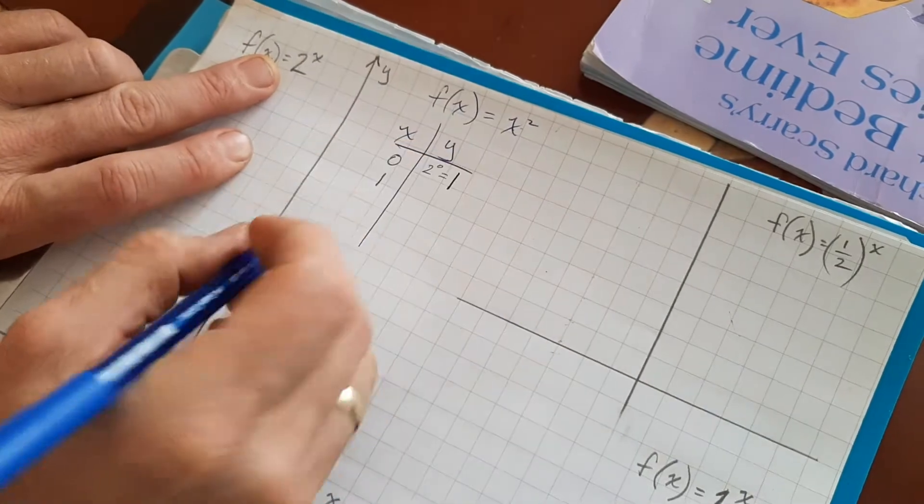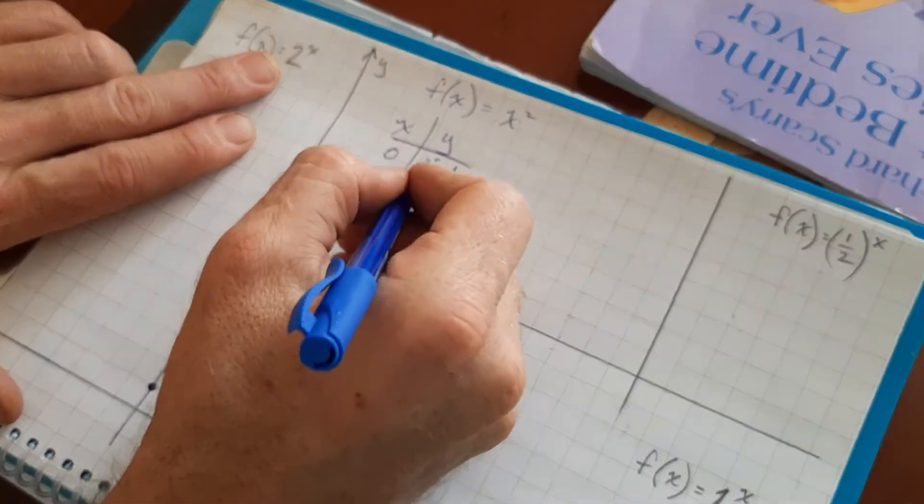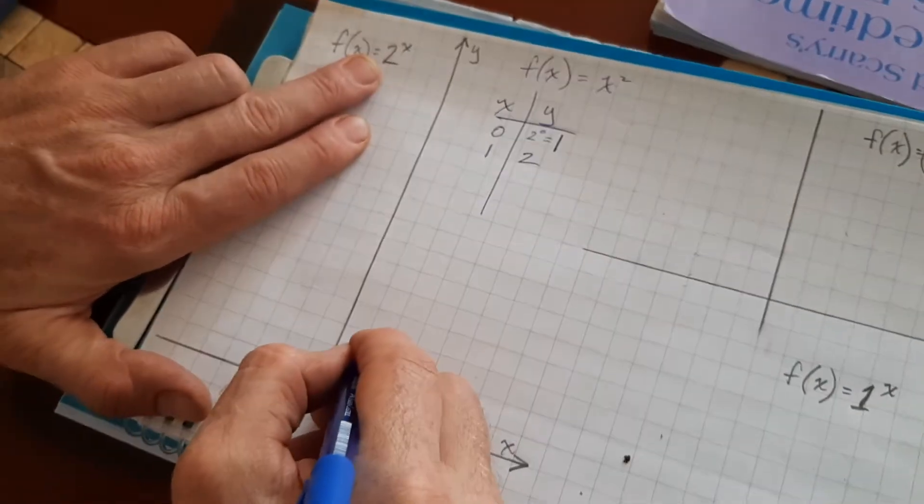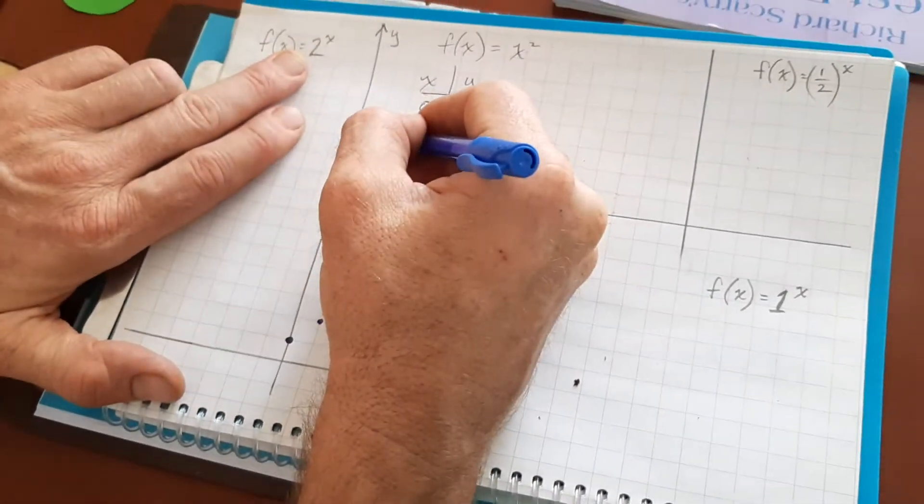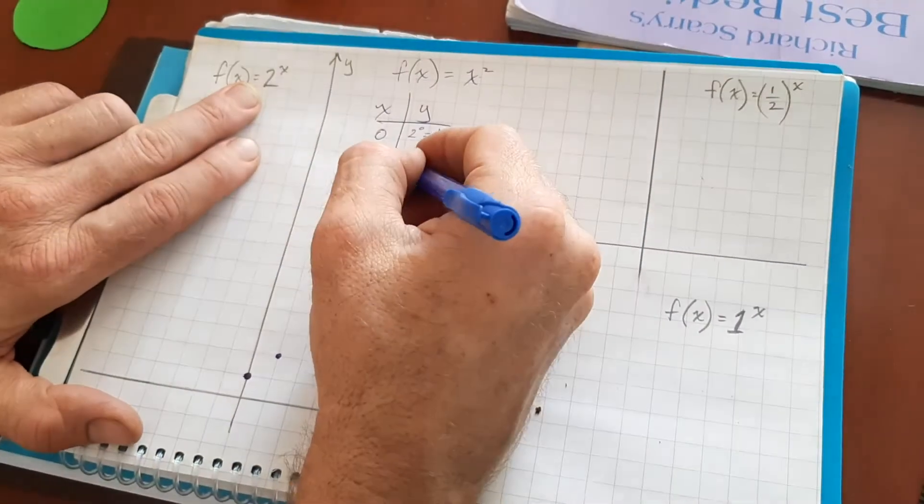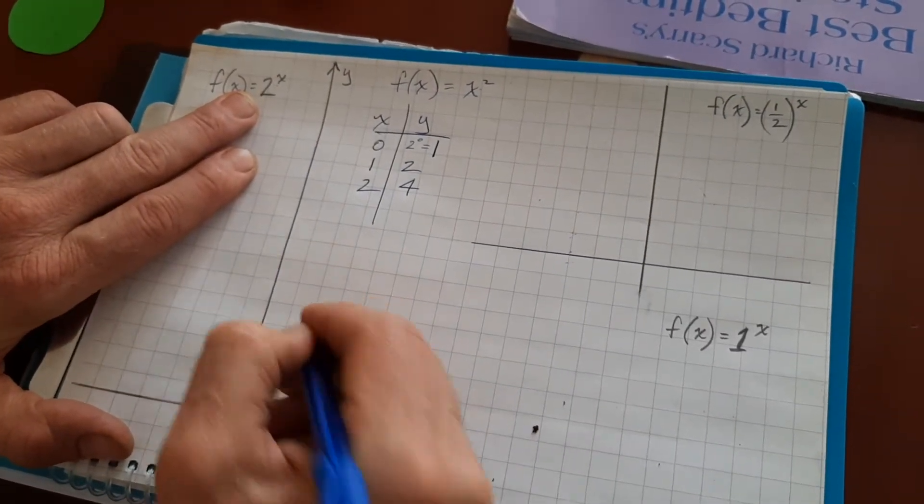Put one in for x. Two to the first power is two. Two raised to the first power. One comma two. Put in a two. Two squared, four. Two comma four.